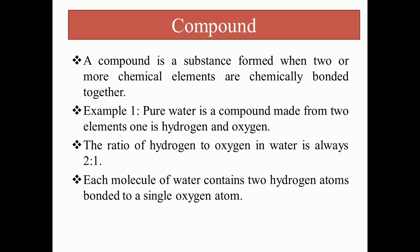Now come to compound. A compound is a substance which is formed when two or more chemical elements are chemically bonded together. For example, water is a compound made from two elements: hydrogen and oxygen. The ratio of hydrogen to oxygen in water is always two to one, and each molecule of water contains two hydrogen atoms bonded to a single oxygen atom.